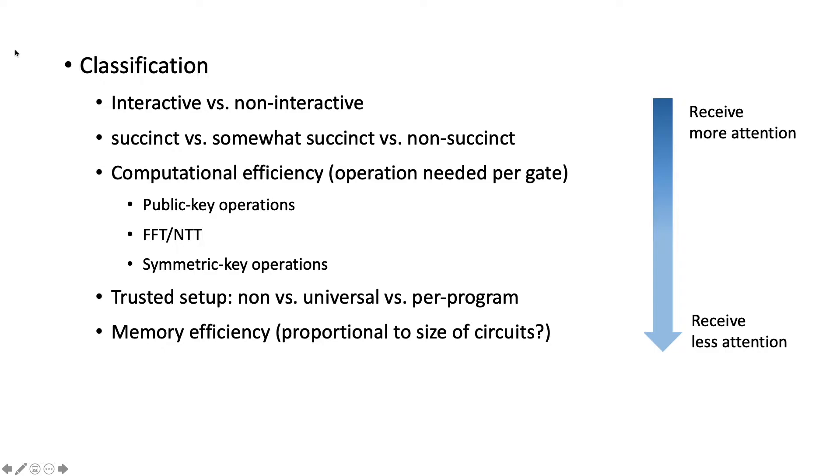Regarding computational efficiency, despite the computational complexity, we should also pay attention to the operation needed per gate. To compute each multiplication gate or AND gate, do we need the public key operations or the FFT or NTT operations or just the symmetric key operations? And for the setup assumption, does the protocol need a trusted setup or not? Last but not least, for memory efficiency, is the memory usage proportional to the size of the circuit or the memory usage proportional to the scenario when the circuit is evaluated in plain text with no cryptography involved?